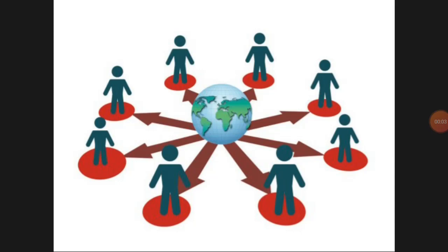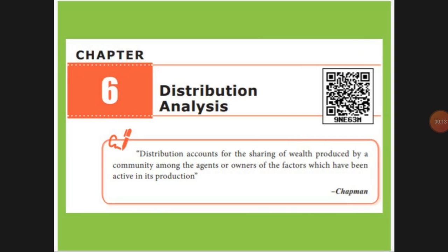Good morning. Class 11 Standard Economics, Chapter 6: Distribution Analysis. The meaning of distribution means how we are dividing the income among the four factors. The first factor is rent to the landlord — if a landowner has land and anybody is using that land, we have to pay rent for it. Next, labor is working, and for that labor we have to pay a wage as a reward.